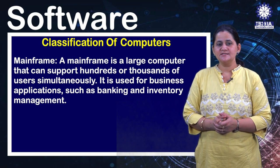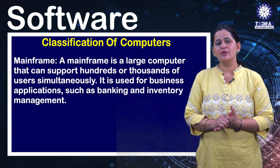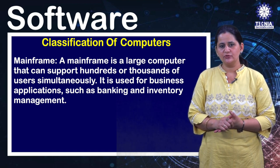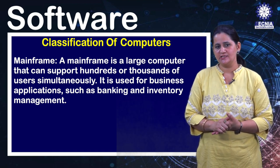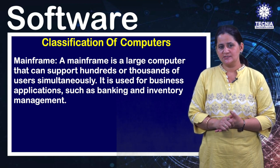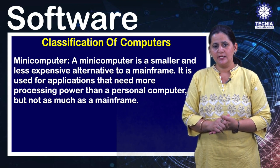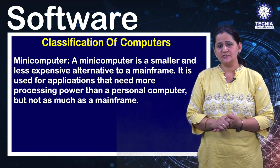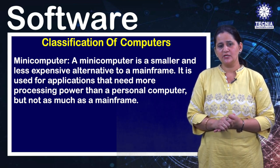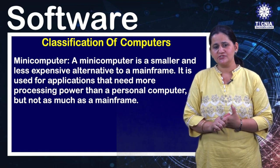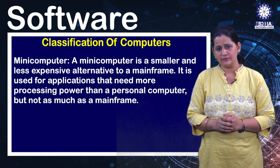The second type is mainframe. A mainframe is a large computer that can support hundreds or thousands of users simultaneously. It is used for business applications such as banking and inventory management. The third type is mini computer. A mini computer is a smaller and less expensive alternative to a mainframe, used for applications that need more processing power.